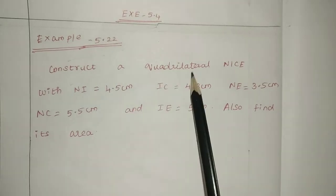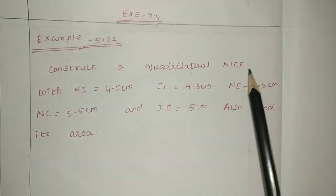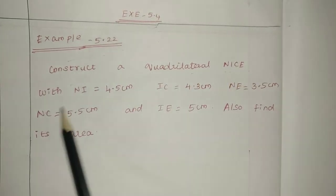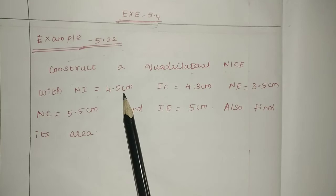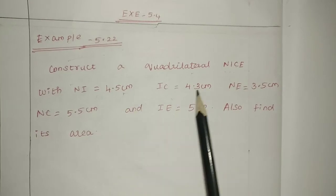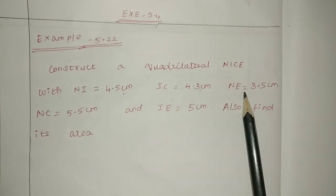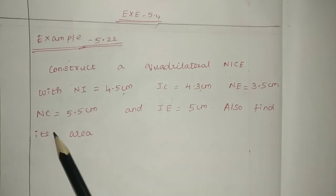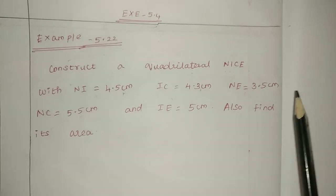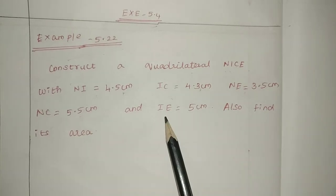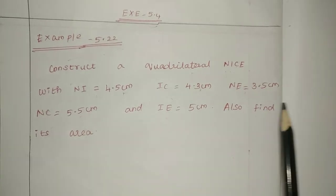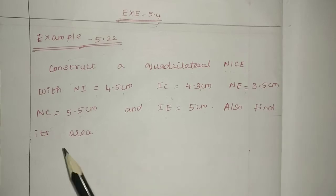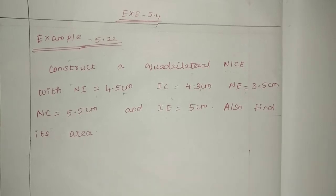Construct a quadrilateral NICE with NI equal to 4.5 cm, IC equal to 4.3 cm, NE equal to 3.5 cm, NC equal to 5.0 cm, and IE equal to 5 cm. Also find its area.